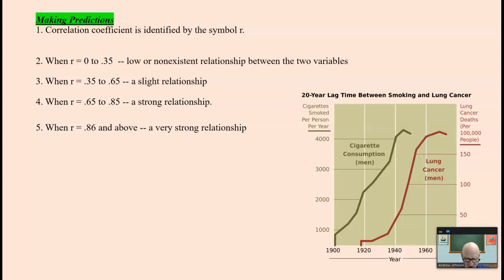Making predictions: when the correlation is zero to 0.35, the relationship is non-existent or very low. Correlation 0.35 to 0.65, slight to strong relationship. And a correlation coefficient of 0.86 shows there is a very strong relationship between the two. Cigarette consumption in men and lung cancer, very strong correlation. We cannot say that this always causes that, but there is a very strong correlation. Some people smoke for years and don't get lung cancer.